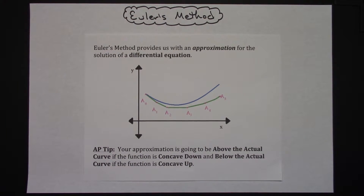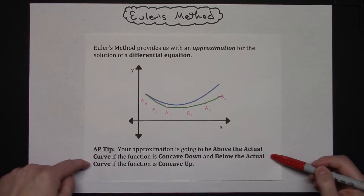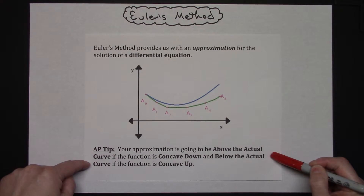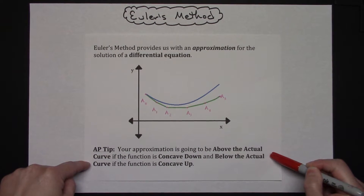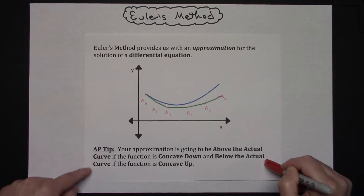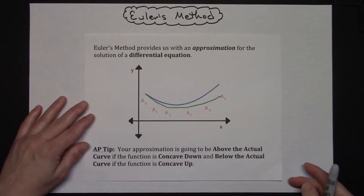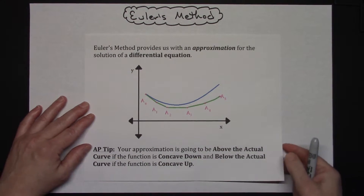If you are going to plan on taking the AP test, your approximation is going to be above the curve if the function is concave down, and it's going to be below the actual curve if the function is concave up. Just a little helpful hint there if you're taking the AP test.